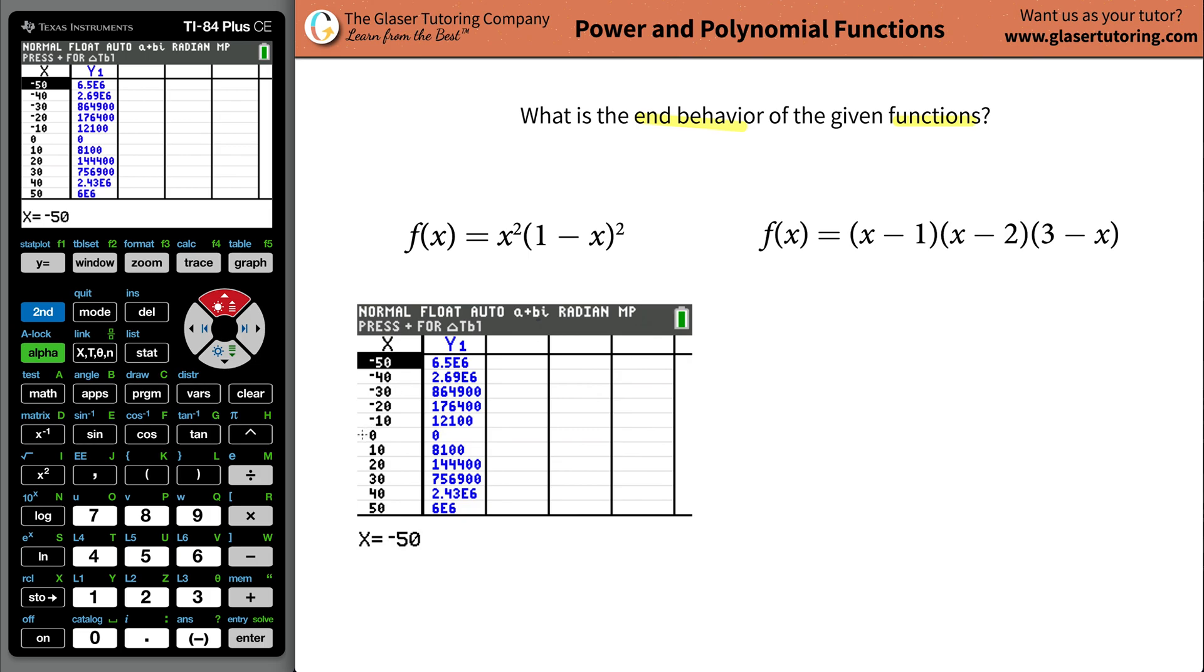So as X becomes more and more negative, what's the trend you're noticing in the Y? It's becoming bigger and bigger and bigger, but in the positive direction. So as X becomes bigger and bigger in the negative direction, Y is becoming bigger and bigger in the positive direction. Now, how do we say that mathematically? Well, we simply say as X goes to negative infinity, as it gets bigger and bigger in the negative direction, the Y value, or you can plug in f(x) there, they're both the same thing, tomato tomato, works its way to a very big number or positive infinity.